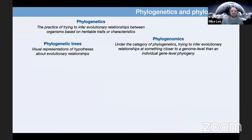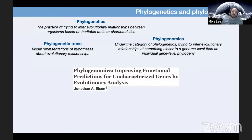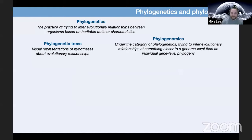This brings us to phylogenomics. While this is under the umbrella of phylogenetics, phylogenomics is used more specifically to convey that we're trying to infer evolutionary relationships at something closer to the whole genome level rather than an individual gene phylogeny. It's worth noting this isn't the only way the term is used, or even how it was originally introduced by Jonathan Eisen when he coined it in his 1998 paper — he was initially using it to describe a method to better resolve predicted functional annotations by incorporating phylogenetic information.